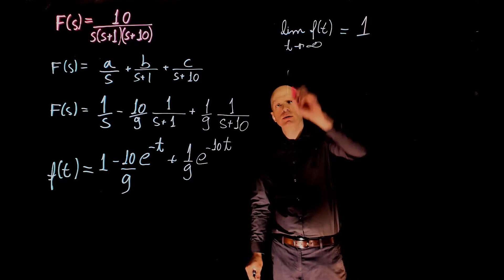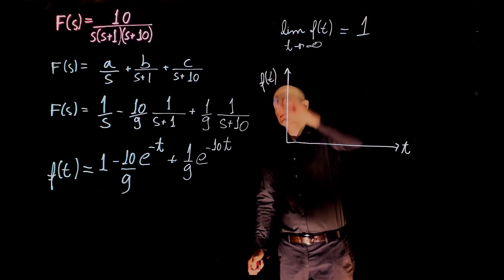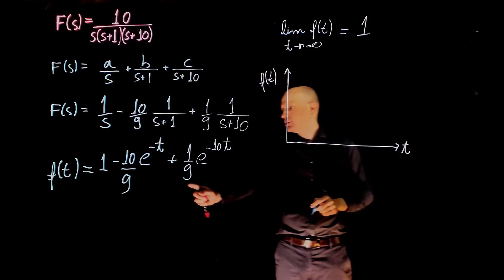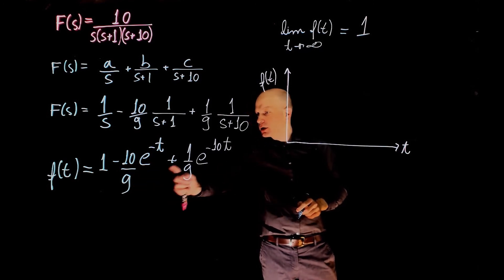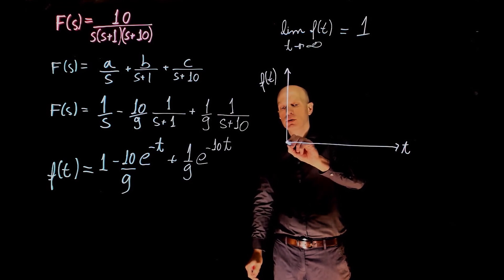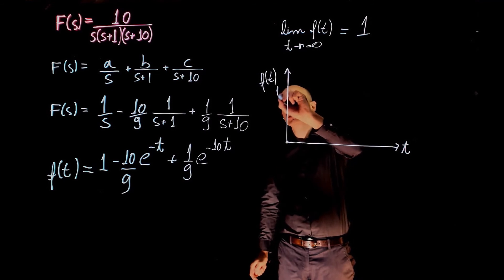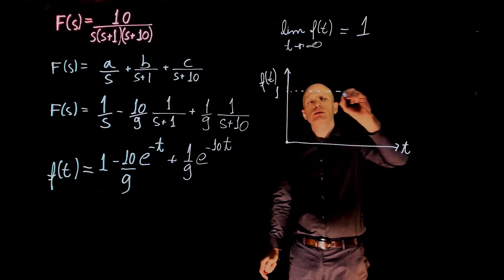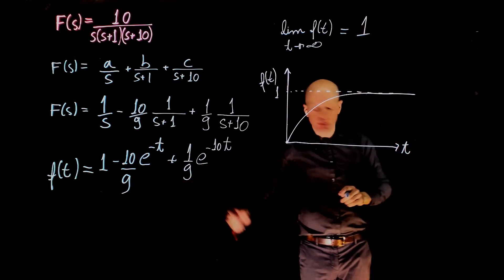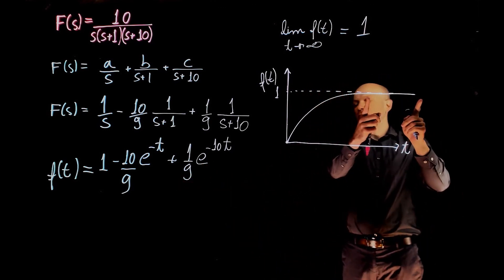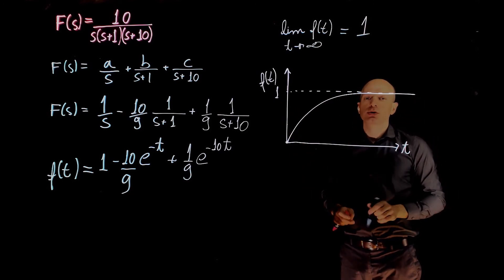Plotting f(t): at t=0, the function evaluates to 1 − 10/9 + 1/9 = 0. As t tends to infinity, the function tends to 1, rising along two exponential curves. The final value of our function is clearly seen as 1 when time tends to infinity.